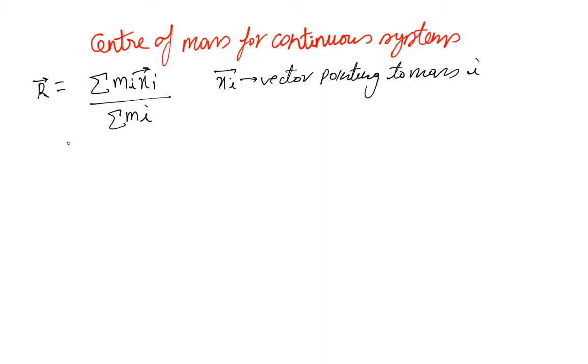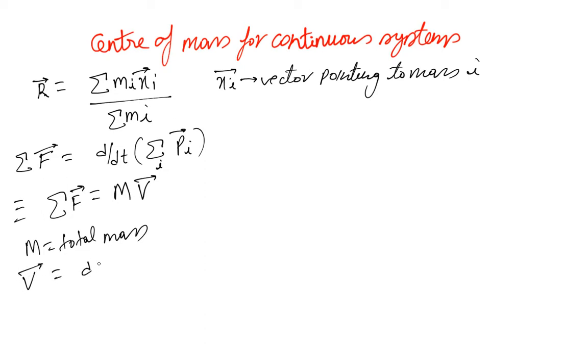Okay so this is how we define center of mass and we said that this equation is the same as MV where M is the total mass of the system, that is sum of all the particles, and V is the velocity of center of mass that is dR over dt.